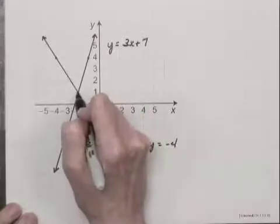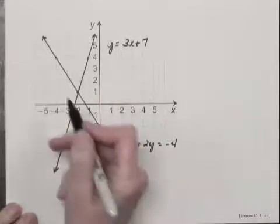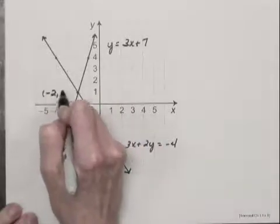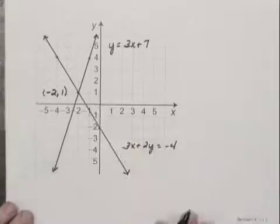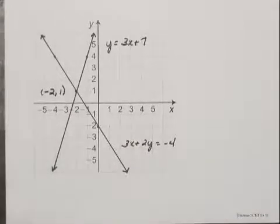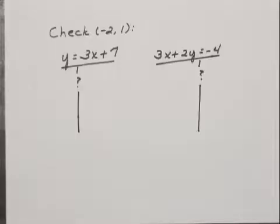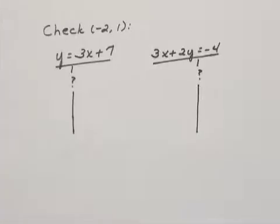And these graphs intersect at this point whose coordinates are negative 2, 1. So if we've drawn the graphs correctly, the solution of the system of equations is negative 2, 1. And let's check that ordered pair in both of these equations. I'm going to be substituting negative 2 for x and 1 for y.